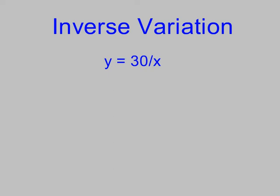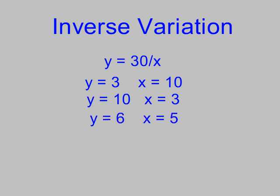Let's say the product of x and y is 30. Well, in that case, if you have y equal to 3, x would be 10. If y is 10, x would be 3. And if y is 6, x would be 5. And you divide the constant by one of the variables to find the other variable.